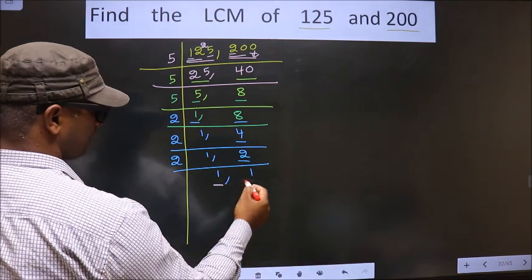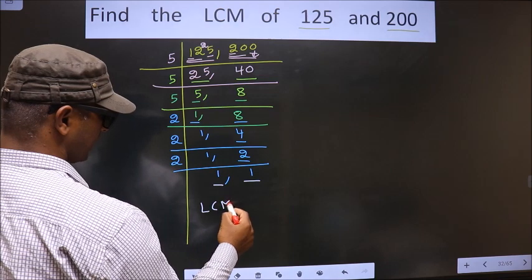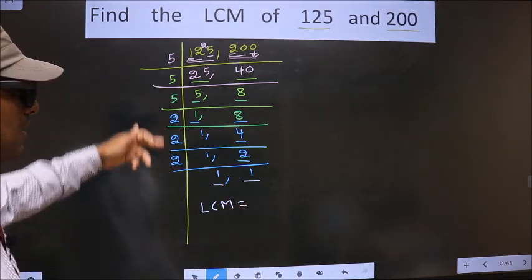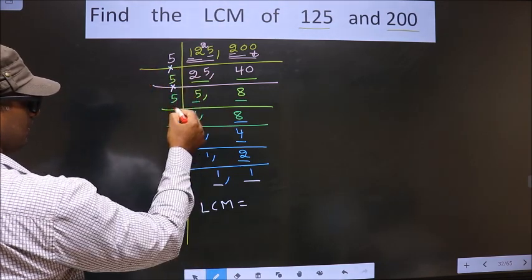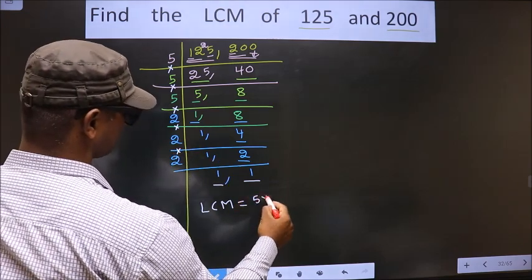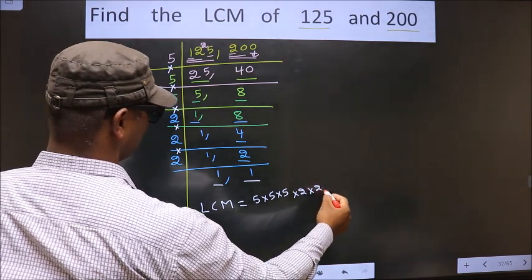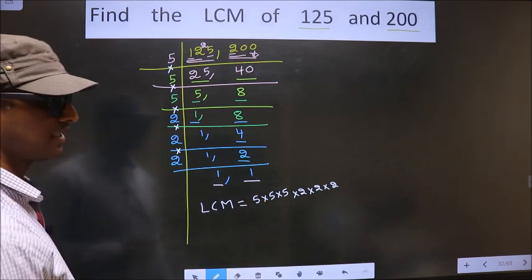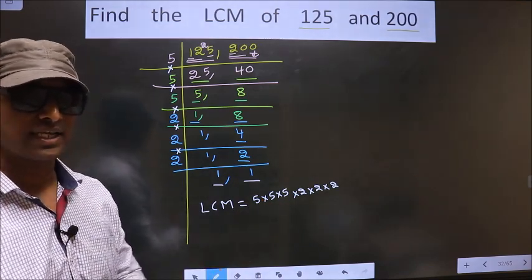So now we got 1 in both the places. So now our LCM is. LCM is the product of these numbers. That is 5 into 5 into 5 into 2 into 2 into 2. So you multiply all these numbers. You multiply all these numbers. Whatever number you get that is your LCM.